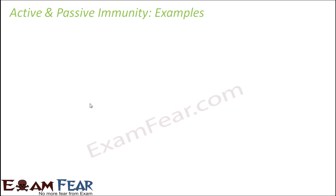Let us look at some examples of both active and passive immunity. Both active and passive immunity can happen naturally or can be made to happen artificially. We will look at examples of both natural and artificial active and passive immunity. Something which happens on its own in nature is natural; something which is man-made is artificial.